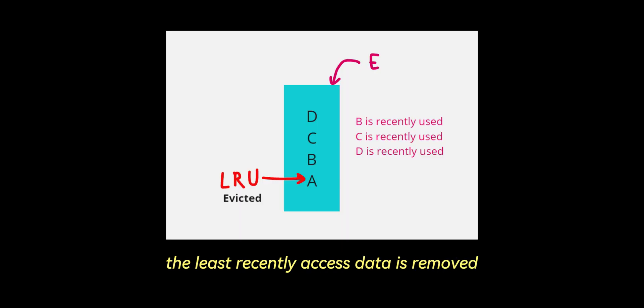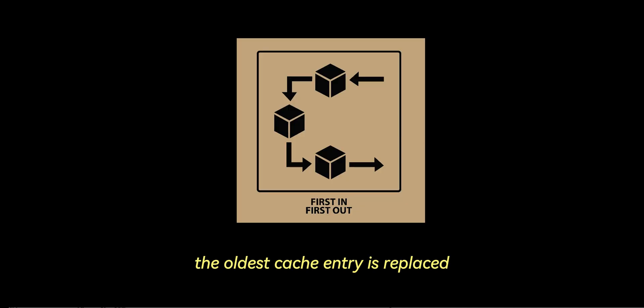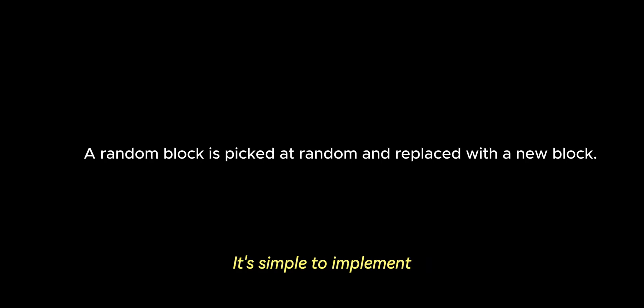Now let's touch on replacement policies. When the cache is full and new data needs to be loaded, the CPU must decide which data to evict. There's a few common strategies. In least recently used or LRU, the least recently accessed data is removed. This method is effective but requires extra hardware to track access patterns. In first-in-first-out or FIFO, the oldest cache entry is replaced regardless of how often it has been accessed. In random replacement, there is random eviction of a cache block. It's simple to implement but less effective in many scenarios.